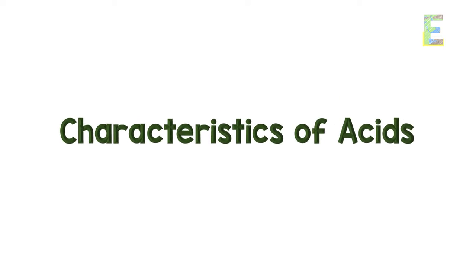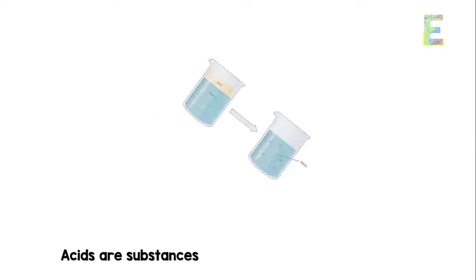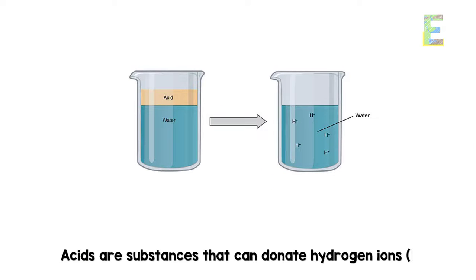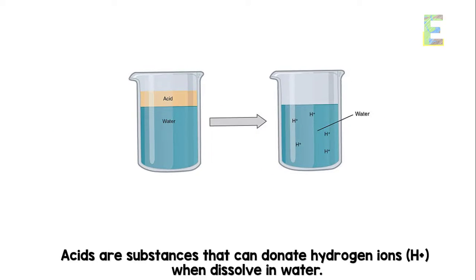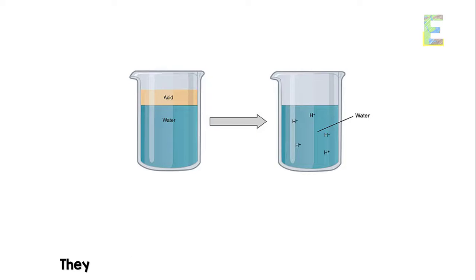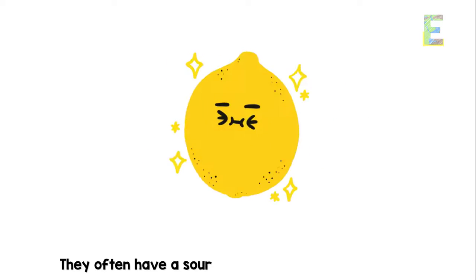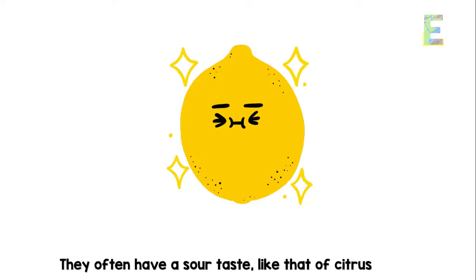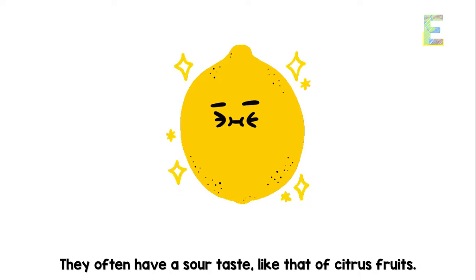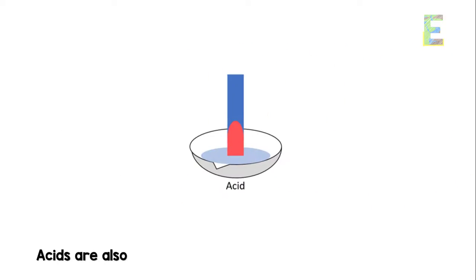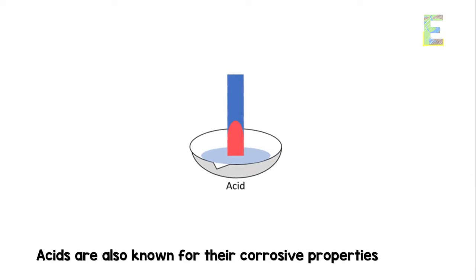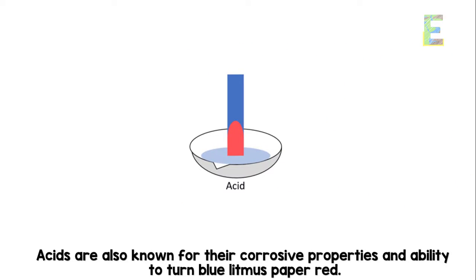Characteristics of acids. Acids are substances that can donate hydrogen ions when dissolved in water. They often have a sour taste, like that of citrus fruits. Acids are also known for their corrosive properties and ability to turn blue litmus paper red.